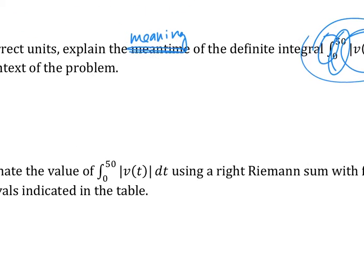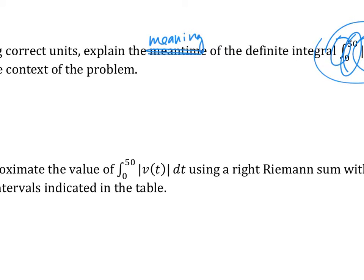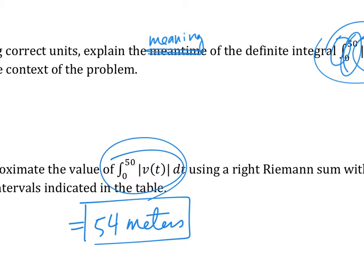Okay, next. Approximate that integral using a right Riemann sum using four subintervals indicated in the table. Right Riemann sum using the interval in the table. The table did not give you equal width, okay? It's not an equal width interval, so please be careful. And be careful, what are they looking for? Total distance or position? Total distance. Total distance. So if it's negative, what are you going to do? Make it positive. Make it positive, okay? So please be careful and read the question. Okay, the answer is 54 meters. Okay, make sure you make it positive, okay?